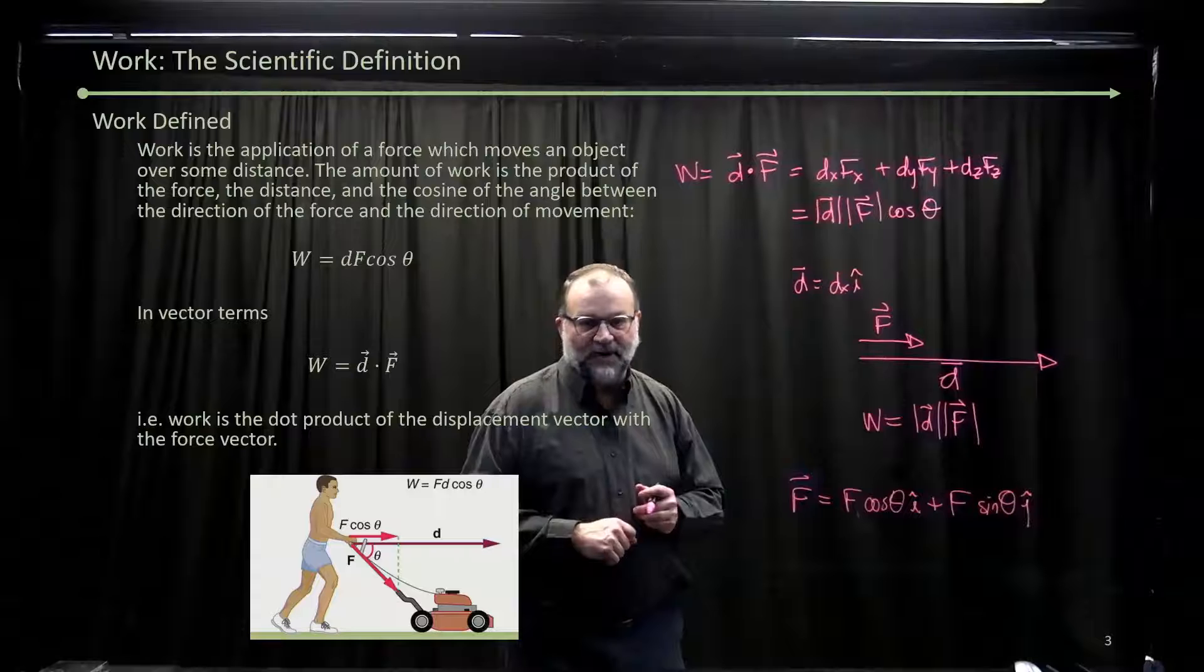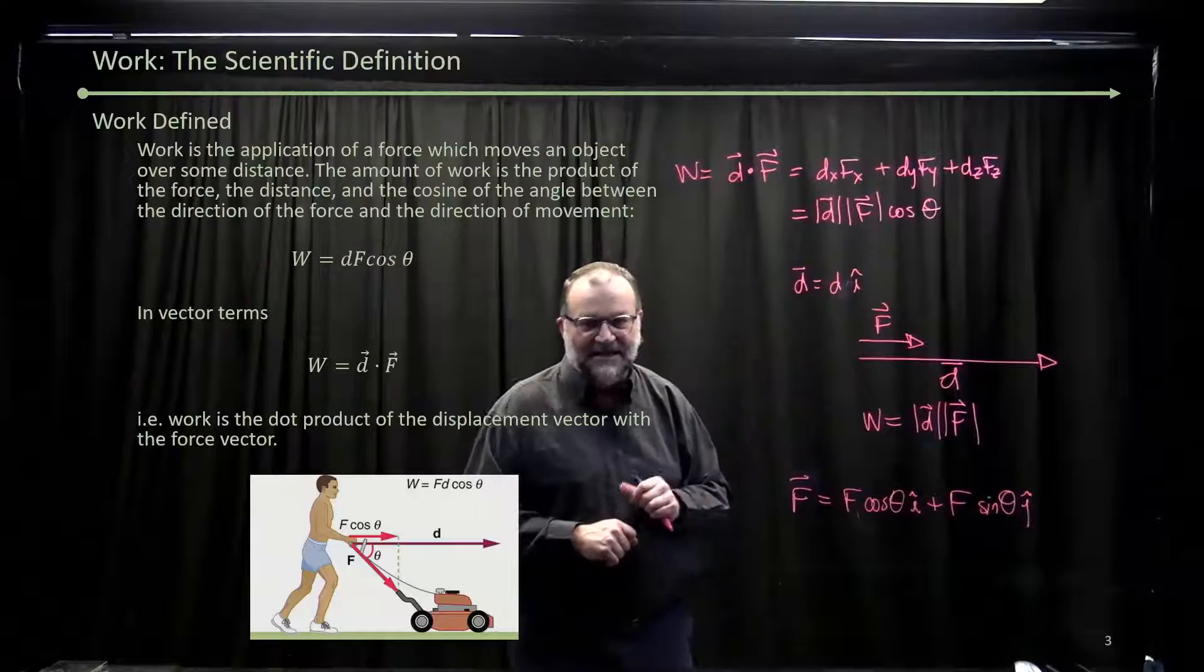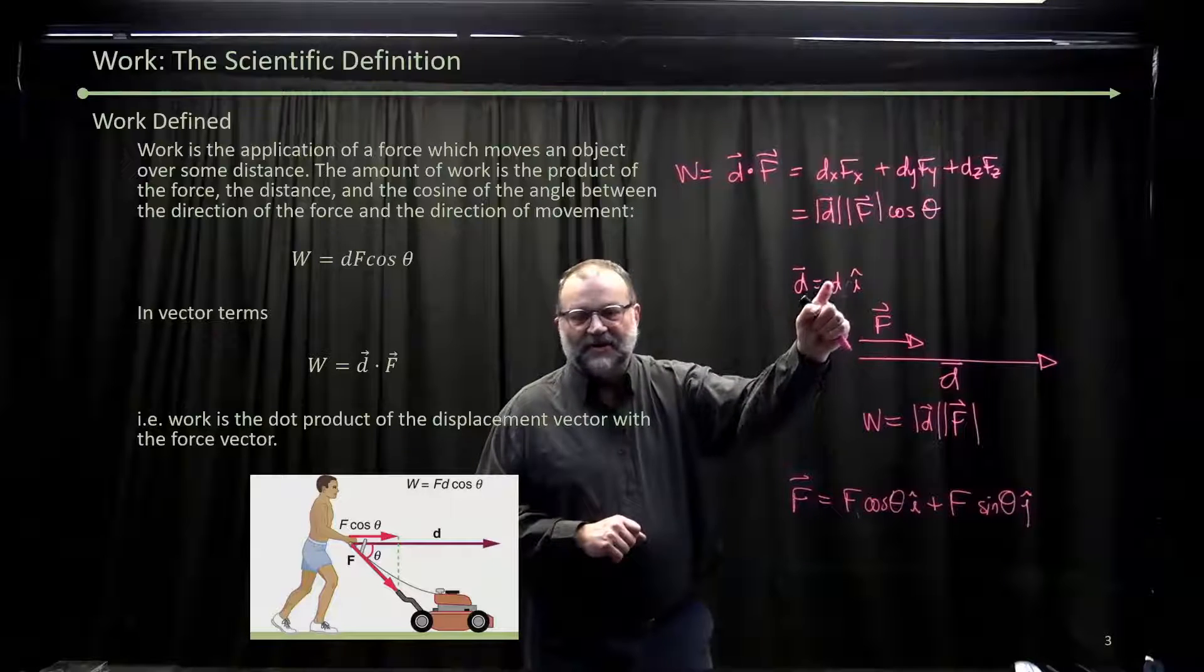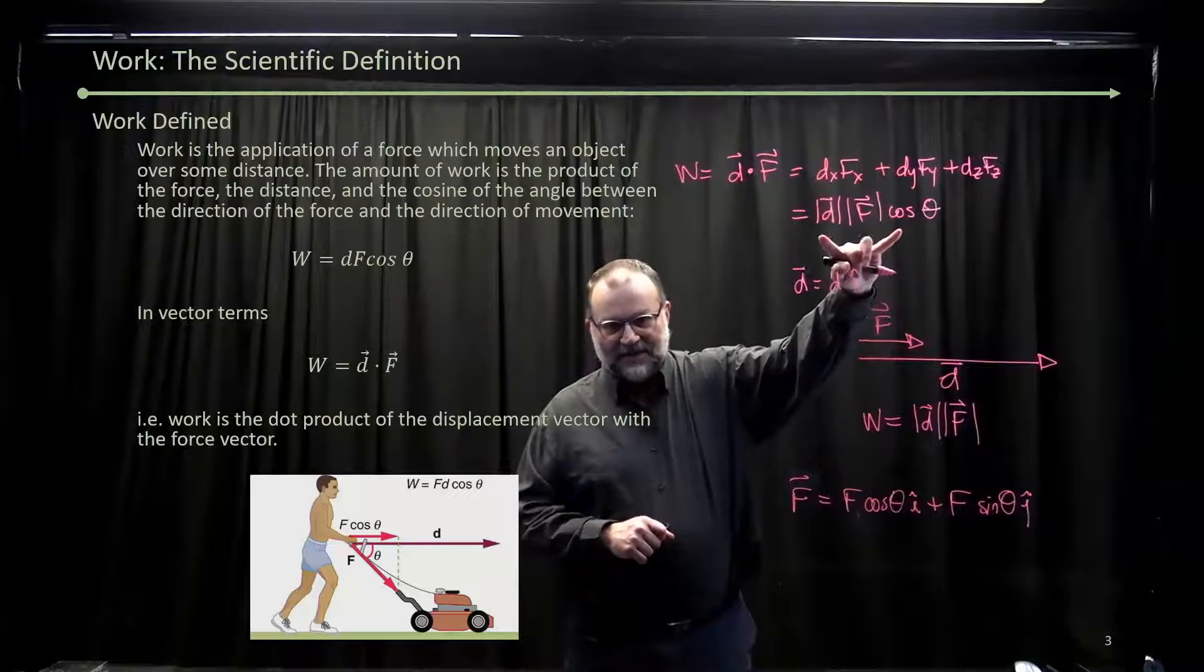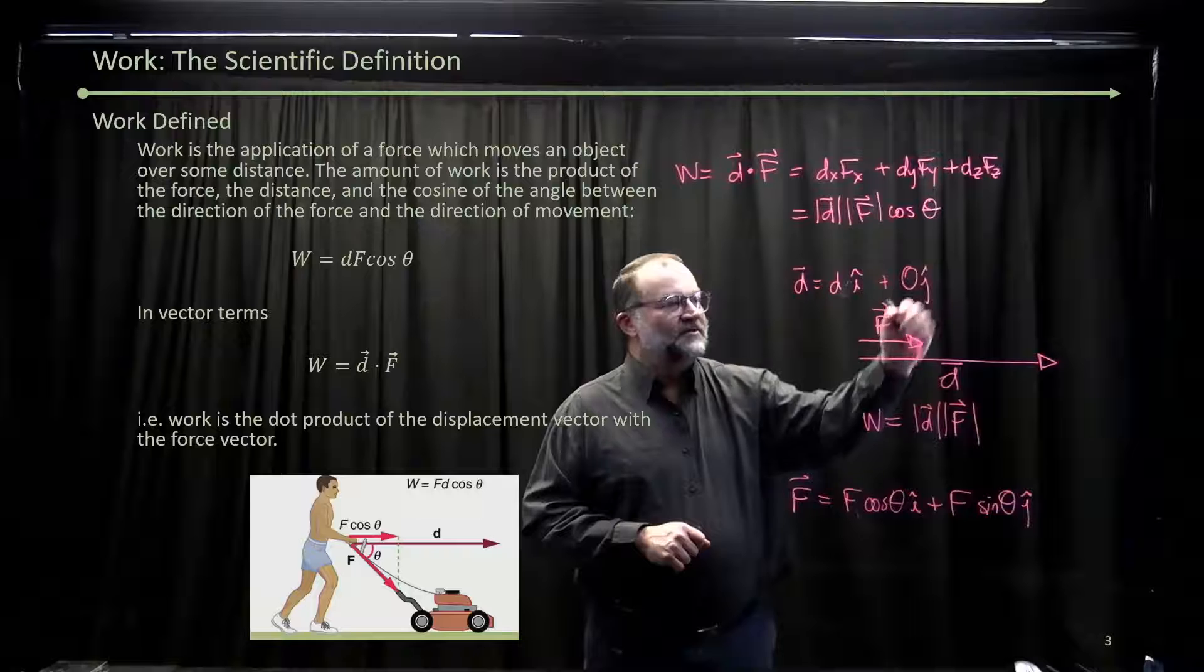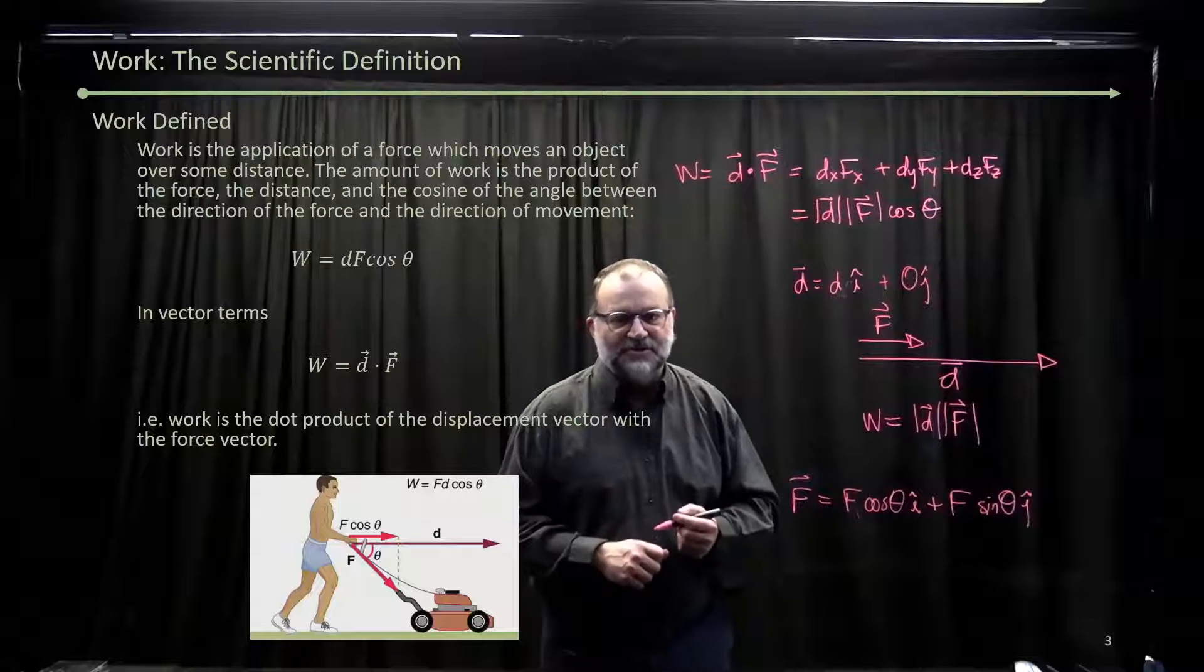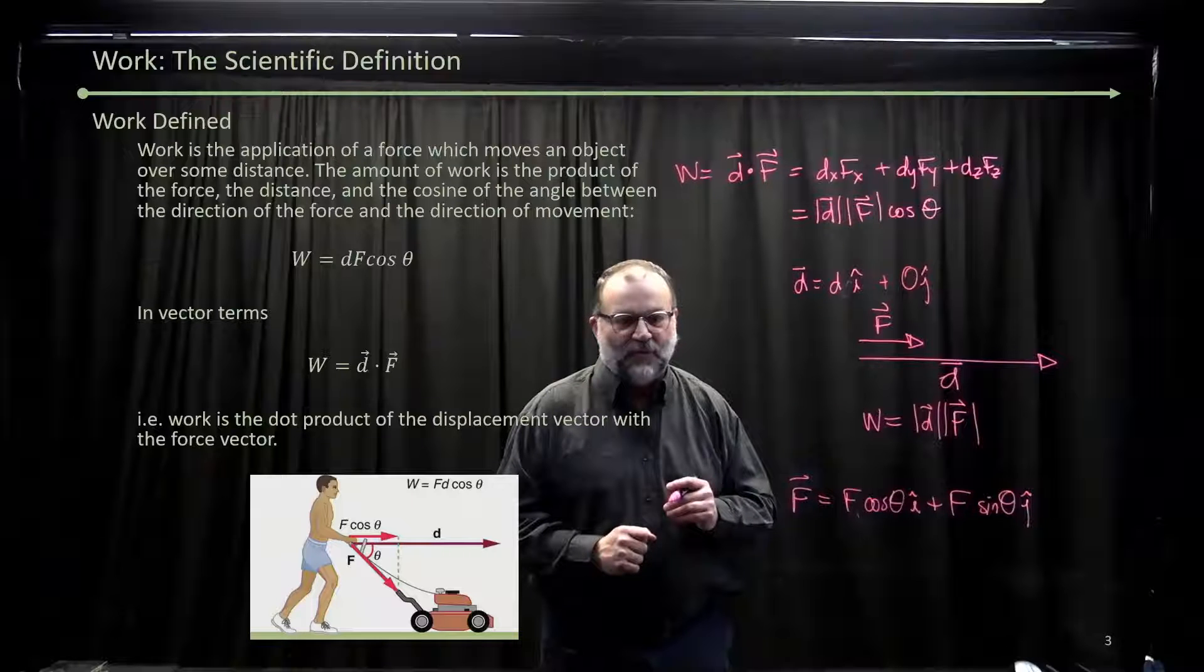When we do the dot product, the x component—I'll just make that d in the i-hat direction—d times f cosine theta. It's what we have right here. And the j component? Well, what's the j component over here? It's zero. So zero times f sine theta. There's no contribution from the y component of the force, because we're not moving in the y direction at all.